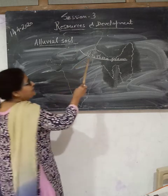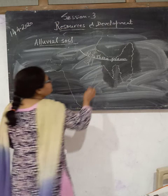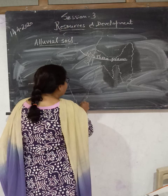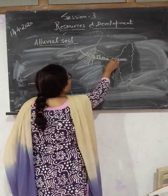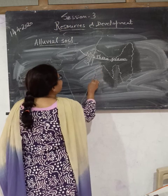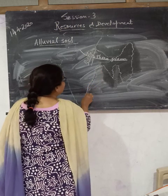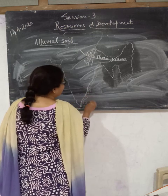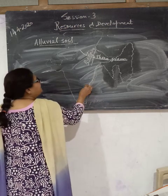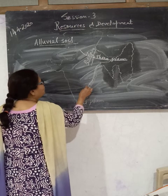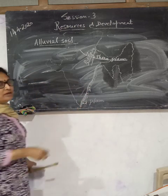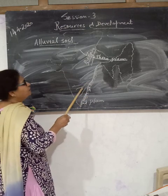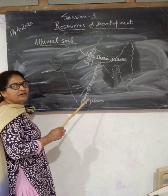Fine particles of sand, silt and clay particles form the eastern coastal plains. These eastern coastal plains are also formed by alluvial soil. Here you can see the deltas of river Krishna, river Godavari, and river Mahanadi. So these are formed by the deposits of alluvial soil brought by the deltas of river Krishna, river Godavari, and river Mahanadi.